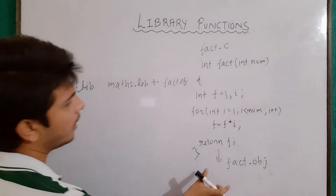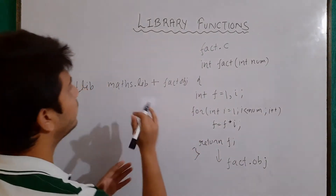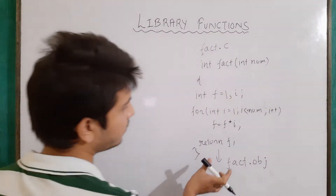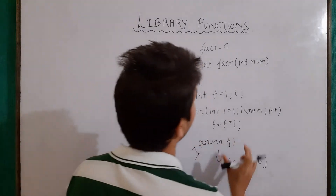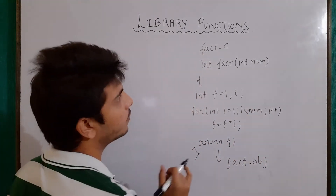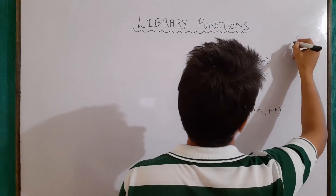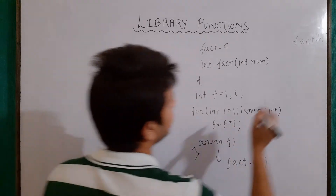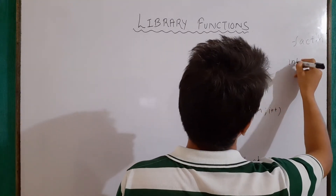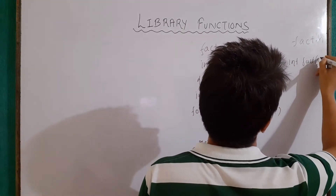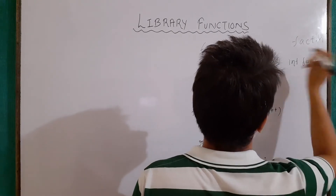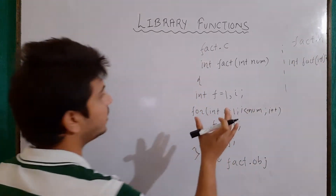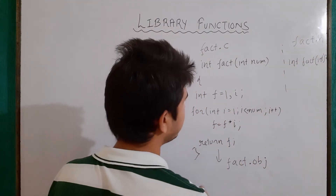Our compiled code has been added to the maths library, so the definition is now present in maths.lib. Now I also have to write its prototype. For the prototype, I will create another file — let's say the name of the file is fact.h. Inside it, I'll write the prototype: something like int fact(int). So the prototype is defined in fact.h and the definition is compiled and added to the maths library.